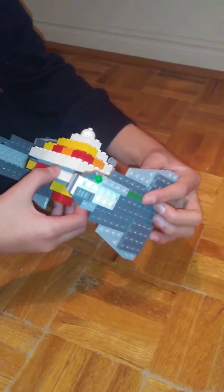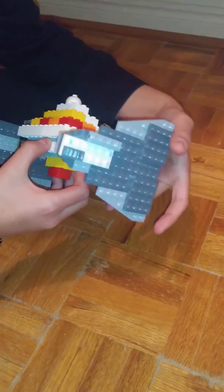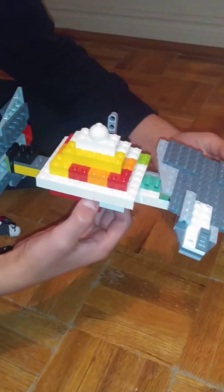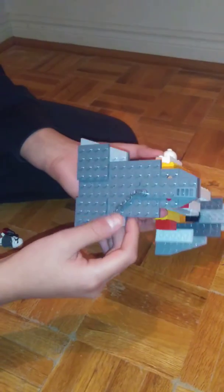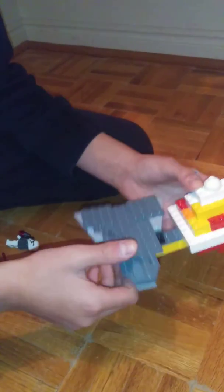There's a missile launcher on this side and the wings can fold in. The other wing has a chain and it can also fold in.